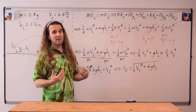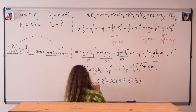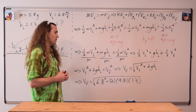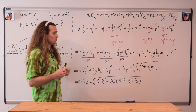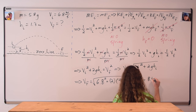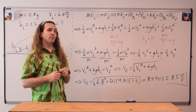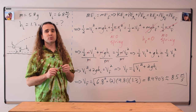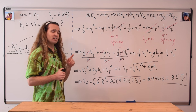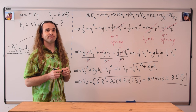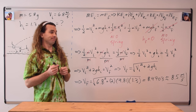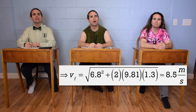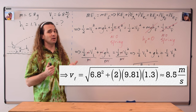Now we can substitute in values. Velocity final equals the square root of the quantity 6.8 squared plus two times 9.81 times 1.3, which works out to be 8.4703, or with two significant digits, 8.5 meters per second. 8.5 meters per second is the final velocity of the ball.